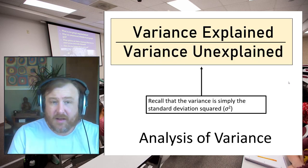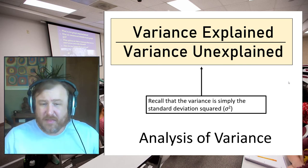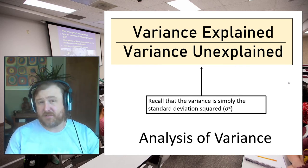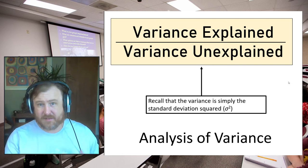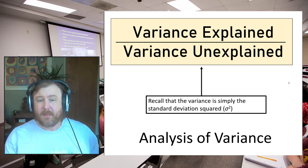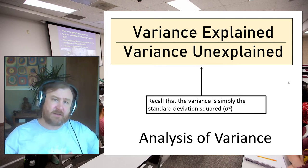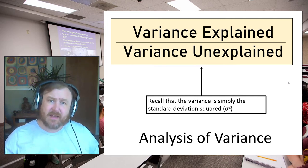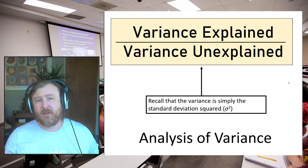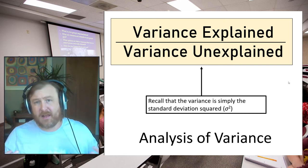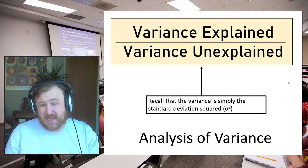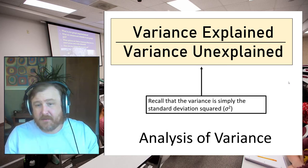This is essentially the same concept as looking at a mean difference over error, except now we're looking at it in units of variance. In ANOVA, we're shifting to variance units and partialing variance out into variance explained and variance unexplained. That ratio between variance explained and variance unexplained is the equivalent of a t in analysis of variance — but we call it an F. In fact, t² equals F: if you square a t-value, it gives the identical result you would get for an F-value using two groups.